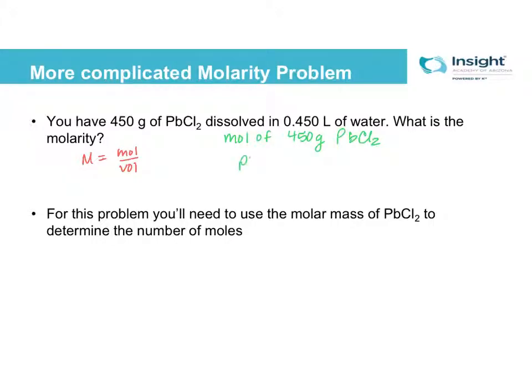So to get that, I need lead plus 2 chlorines. Lead is 207 plus 35 plus 35, which equals 277 grams per mole. So I'll have 450 divided by 277, which equals 1.62 moles of lead chloride.